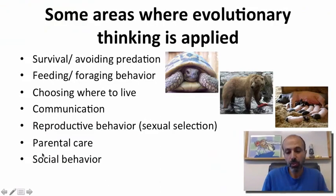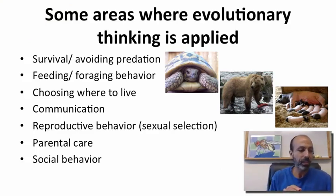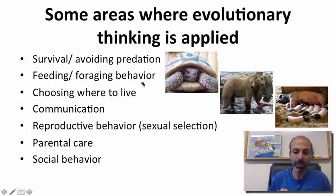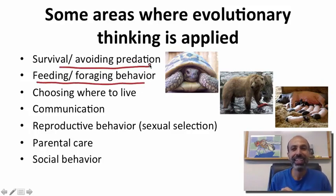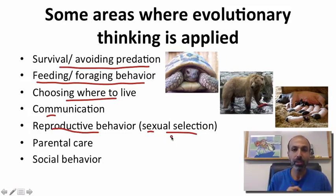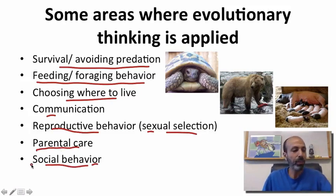Some areas where evolutionary thinking is applied to the study of animal behavior include survival and avoiding predation — obviously very important for passing on your genes is that you don't get killed early — feeding or foraging behavior, choosing where to live, communicating, reproductive behavior, sexual selection, parental care, and social behavior. We'll dabble into a couple of these in the videos here.